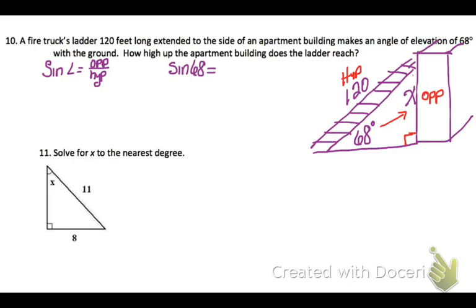So I'm going to say the sine of 68 degrees equals X over 120. Now to solve this, I'm going to put sine of 68 over 1. So it forms a proportion and then I'm just going to cross multiply. And I put it in my calculator and I get that it is approximately 111 feet up the side of that building.